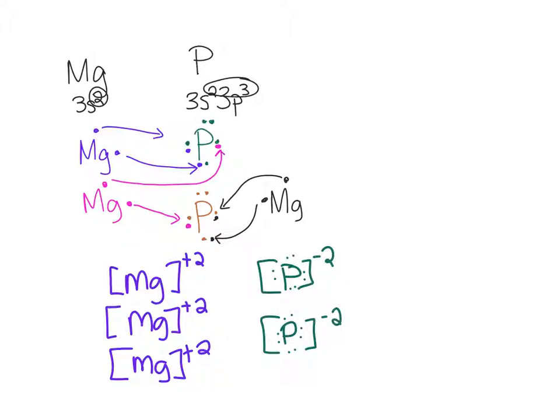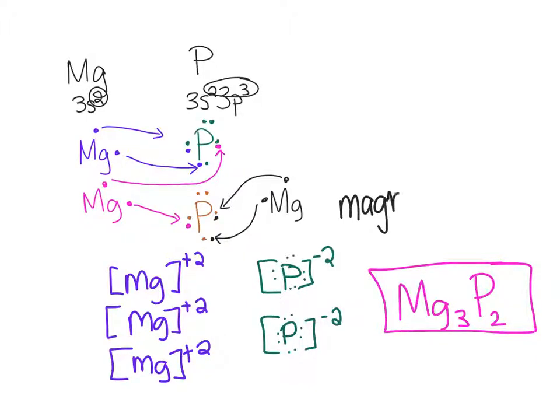Once you've gotten here, you count them up. We have three magnesium, so I'm going to go Mg3, and two phosphorus. And that is our answer. So, the way we would name this is, once again, we're going to just look at our first one is magnesium. And phosphorus, we're going to change that ending to an -ide, so phosphide. And that is it.